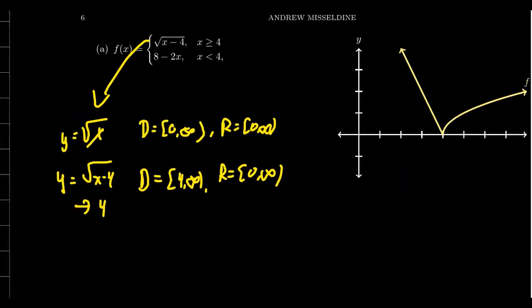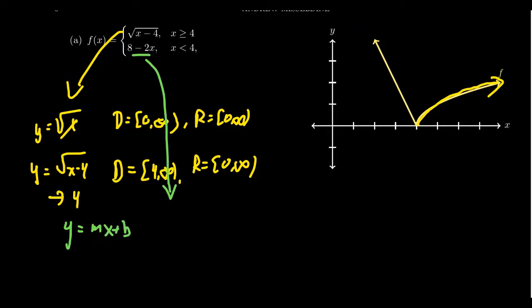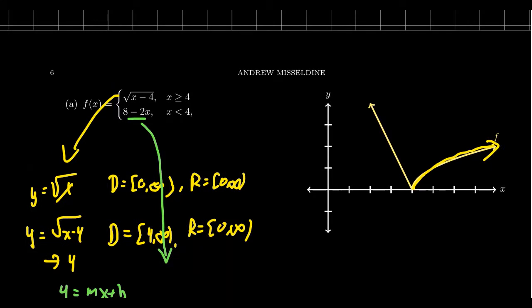Coming back to the main picture, what do you get from the other chunk? The other chunk came from 8 minus 2x when x is less than 4. As it's just a line, I prefer to think of it in slope-intercept form mx plus b, where the y-intercept is 8 — somewhere up here. Counting up 1, 2, 3, 4, 5, 6, 7, 8 — that's your y-intercept.